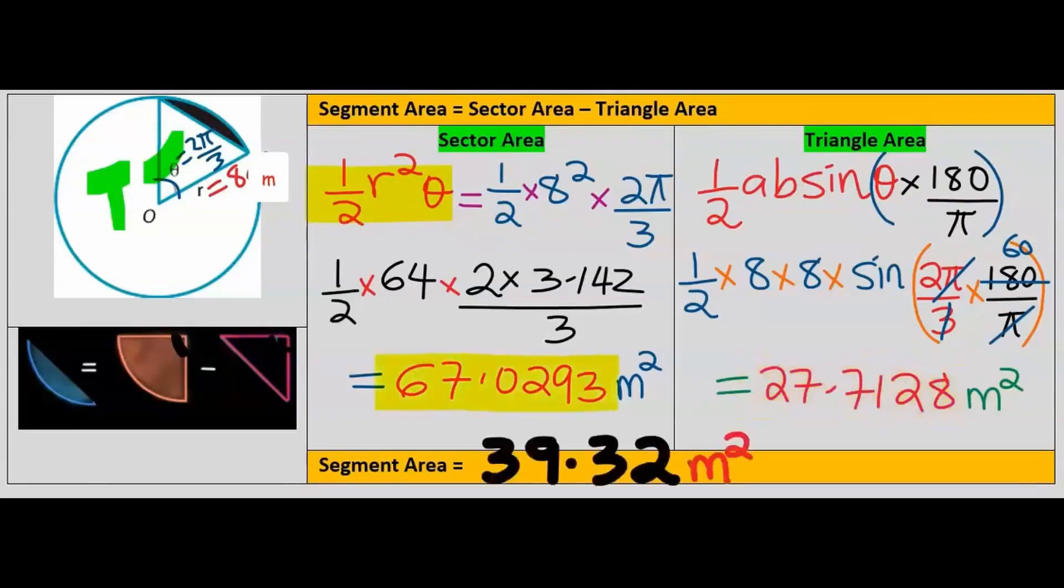The area of the sector minus the area of the triangle is 39.32 meters squared for the area of the segment, to two decimal places and four significant figures.